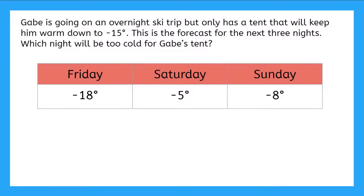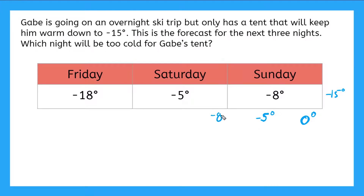We'll need to add negative 15 degrees into our list here. So let's imagine that this is zero on the number line. Since all of these are negative temperatures, zero would be our biggest or our warmest temp. Negative 5 would be the closest to zero, and then negative 8 would be the next closest temperature, then negative 15 degrees, and negative 18 degrees would be the furthest from zero.